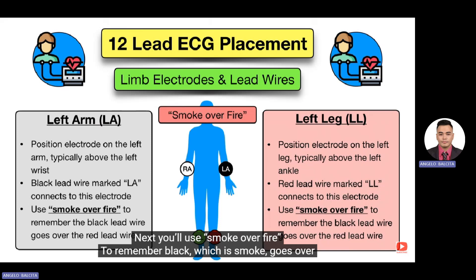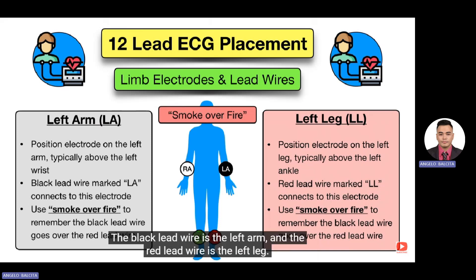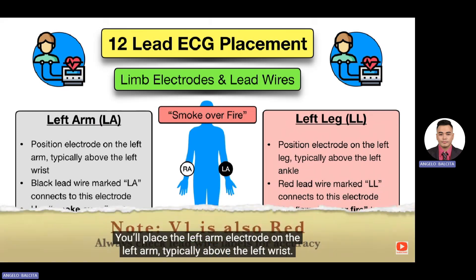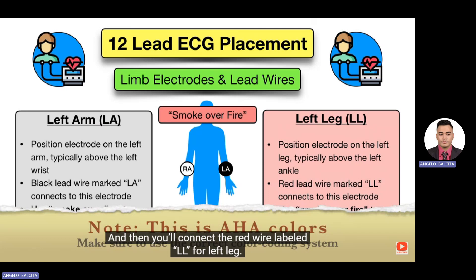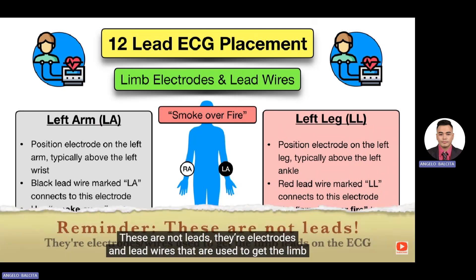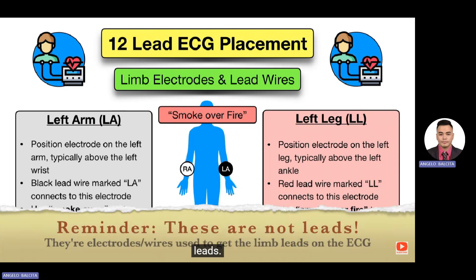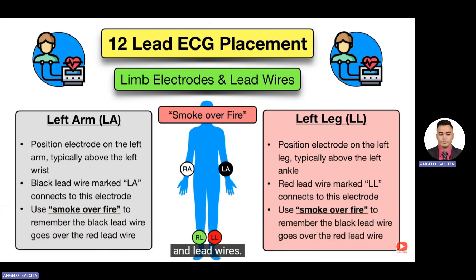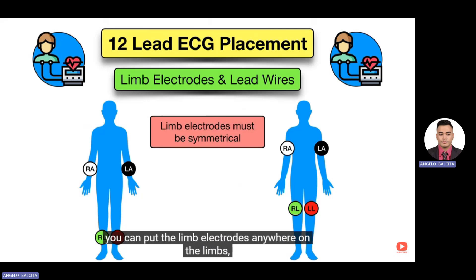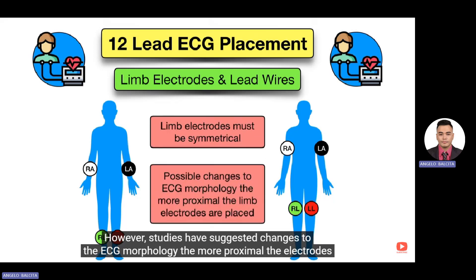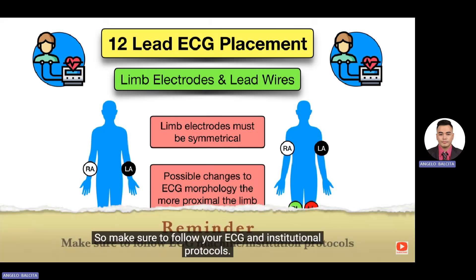Next, use 'smoke over fire' — black (smoke) goes over red (fire). The black lead wire is the left arm, placed above the left wrist and connected to the wire labeled LA. The red lead wire is the left leg, placed above the left ankle and connected to the wire labeled LL. Remember: these are electrodes and lead wires, not leads — the limb leads are what you see on the ECG derived from these. Studies suggest potential ECG morphology changes the more proximal the electrodes are placed, so follow your institutional protocols.